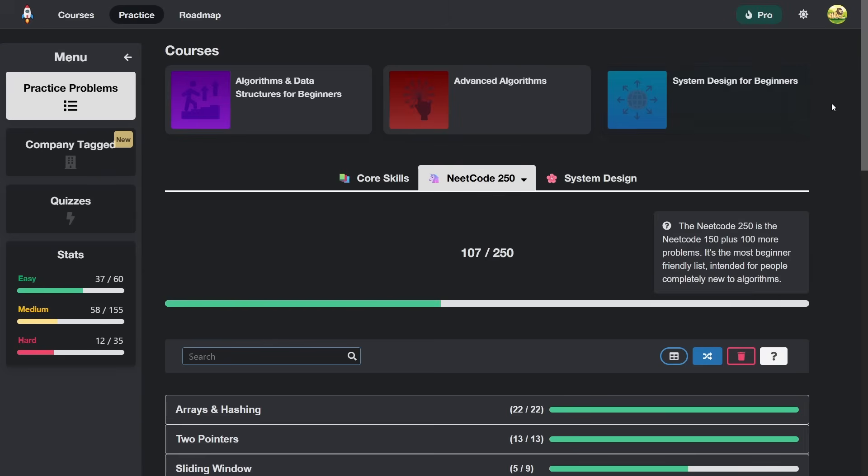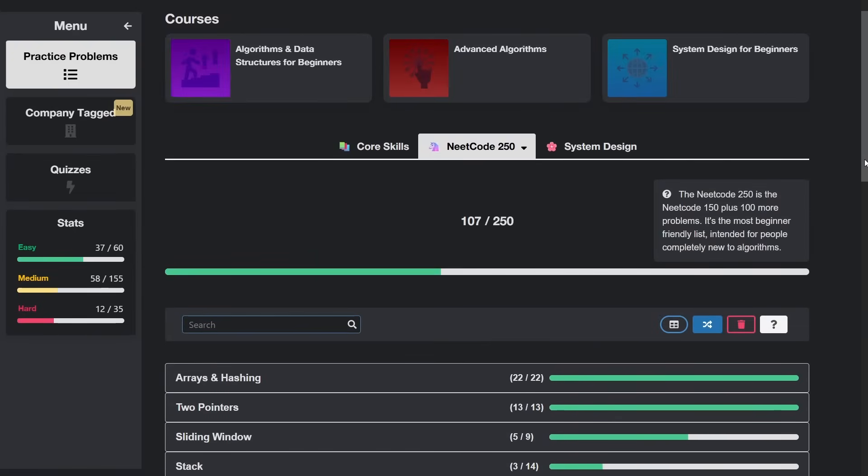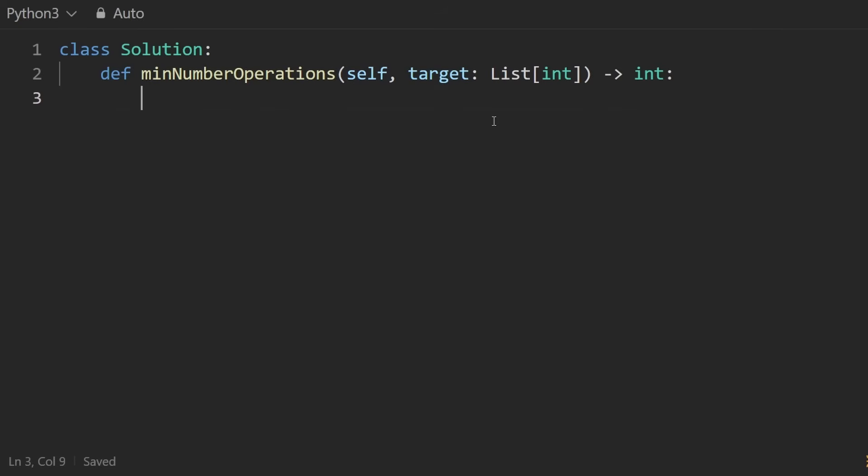And if you are interested, you can check out NeatCode.io, which does have a pretty good greedy section, especially if you check out the NeatCode 250 list. It's the new one.